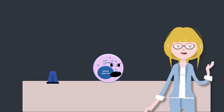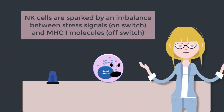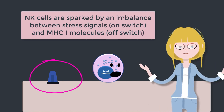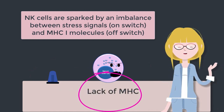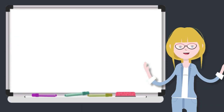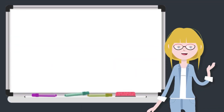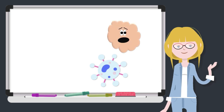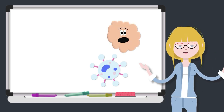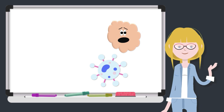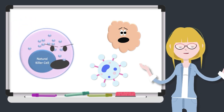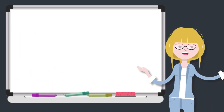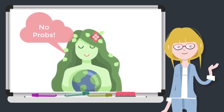So for NK cells, the decision to get involved is about the balance between the stress signals — the on switch — and the MHC1 molecules — the off switch. And so we see how magical this is: in situations where viruses or cancer cells have mutated to a place where they can now evade T cell detection, natural killer cells can swoop in and overcome the problem. Amazing, right? Thank you, Mother Nature. You really thought about this.